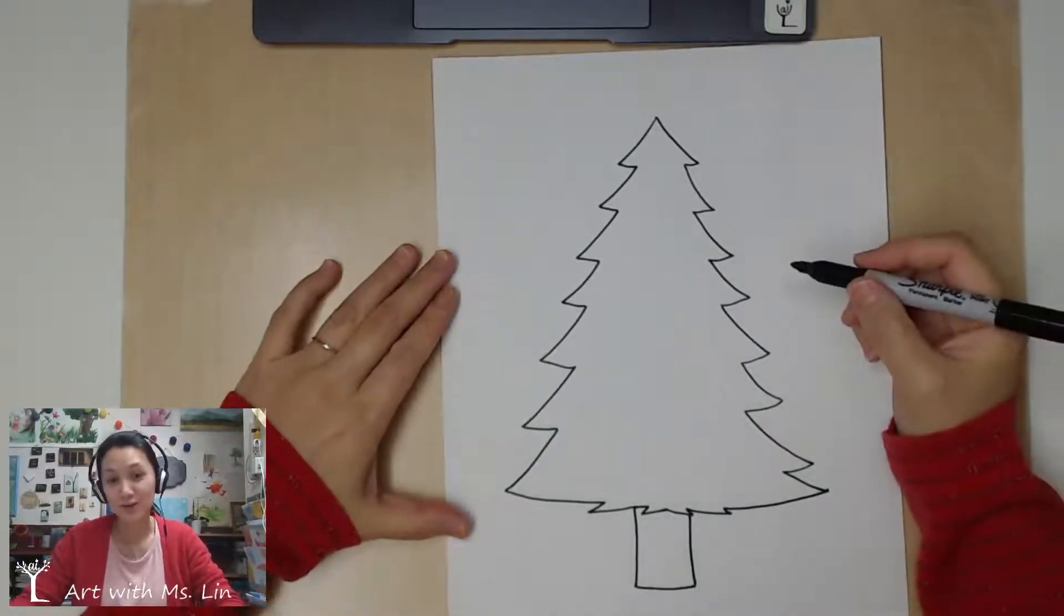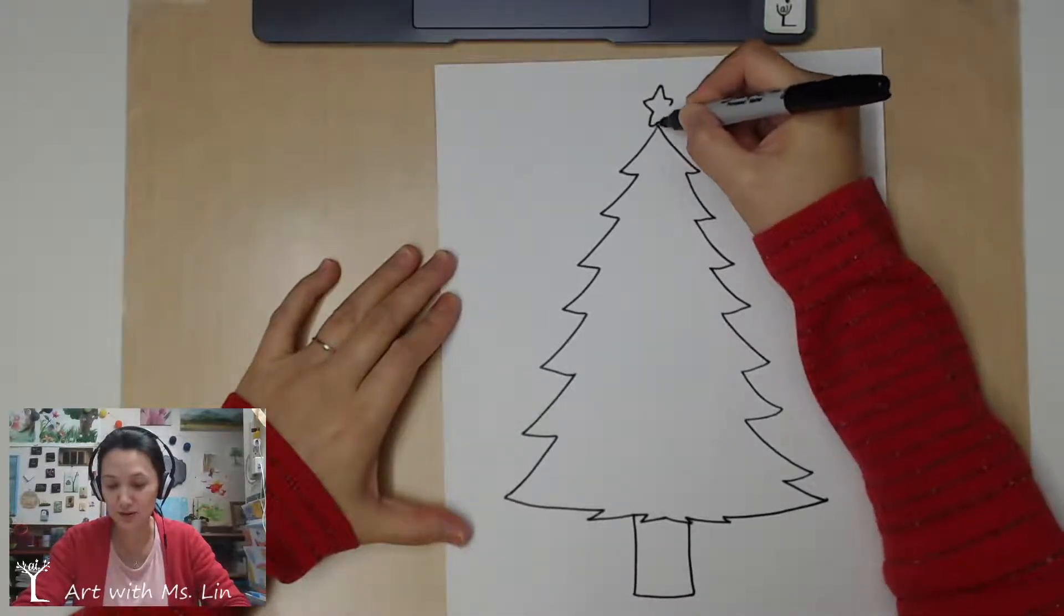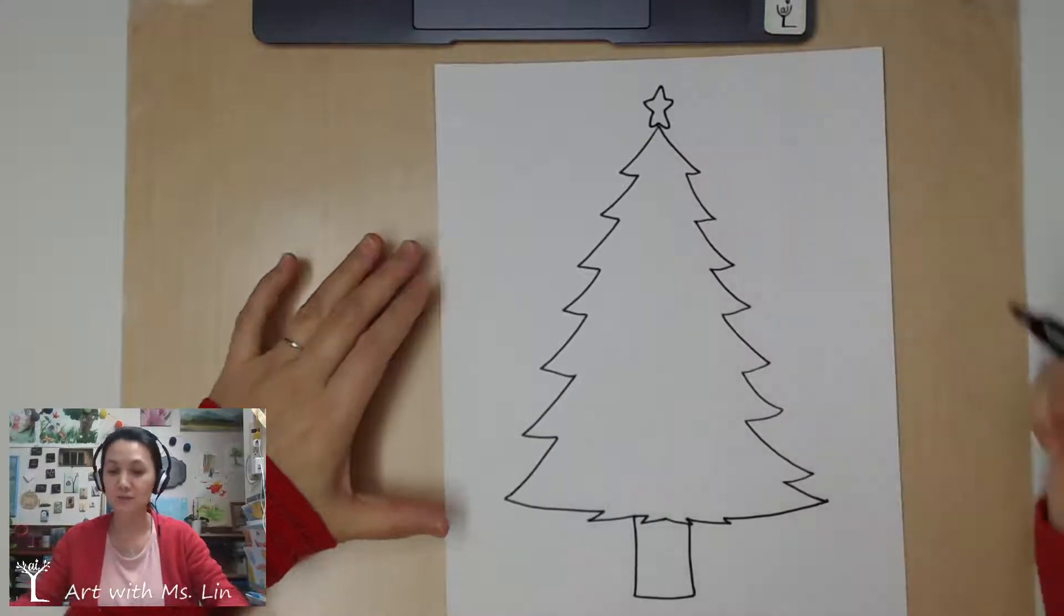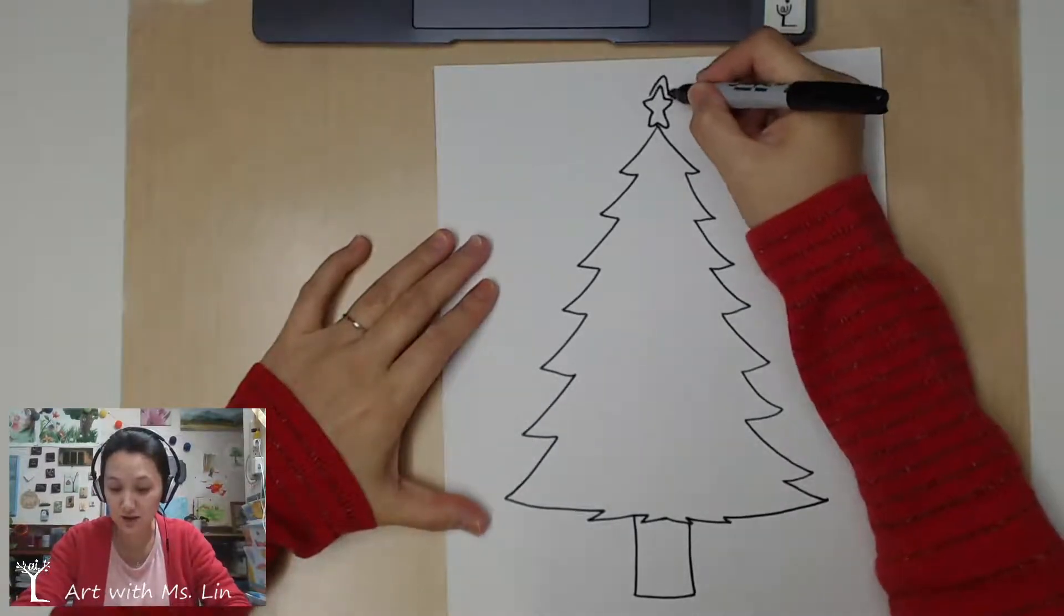Now, think about how you want to decorate your tree. You might want to have a star, which is what a lot of people do for the top of the tree. Kind of skinny star. I could add another layer to make it a little bigger.